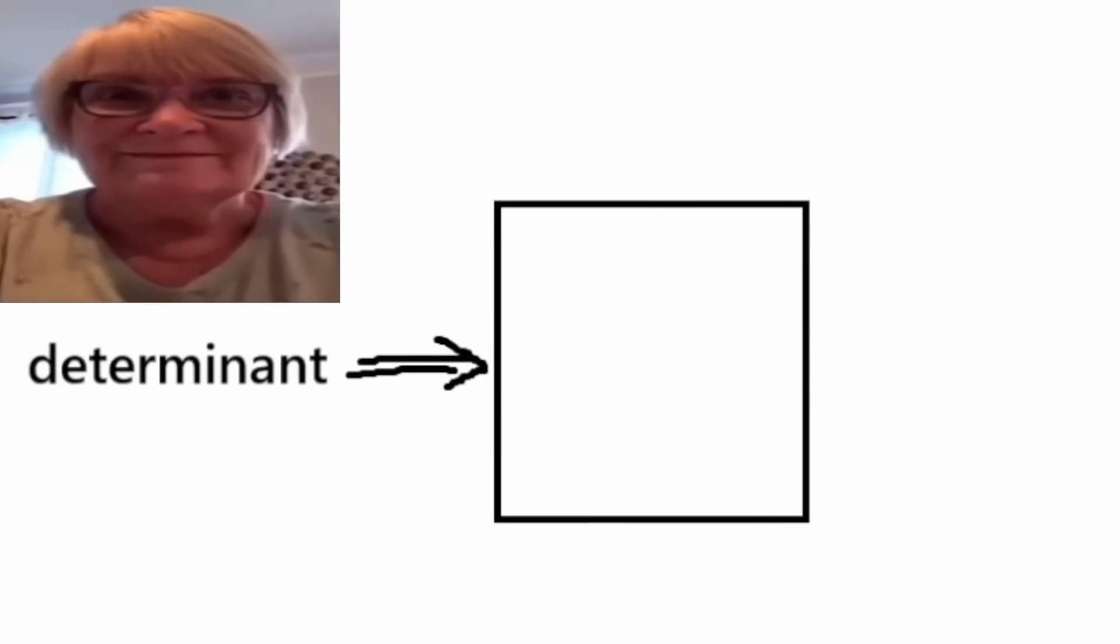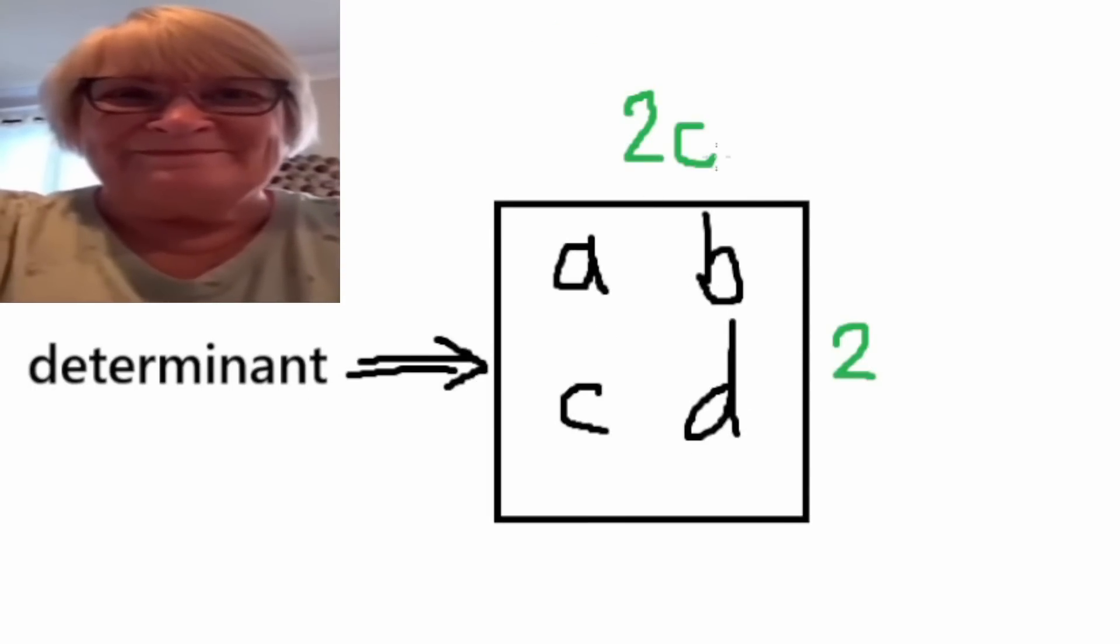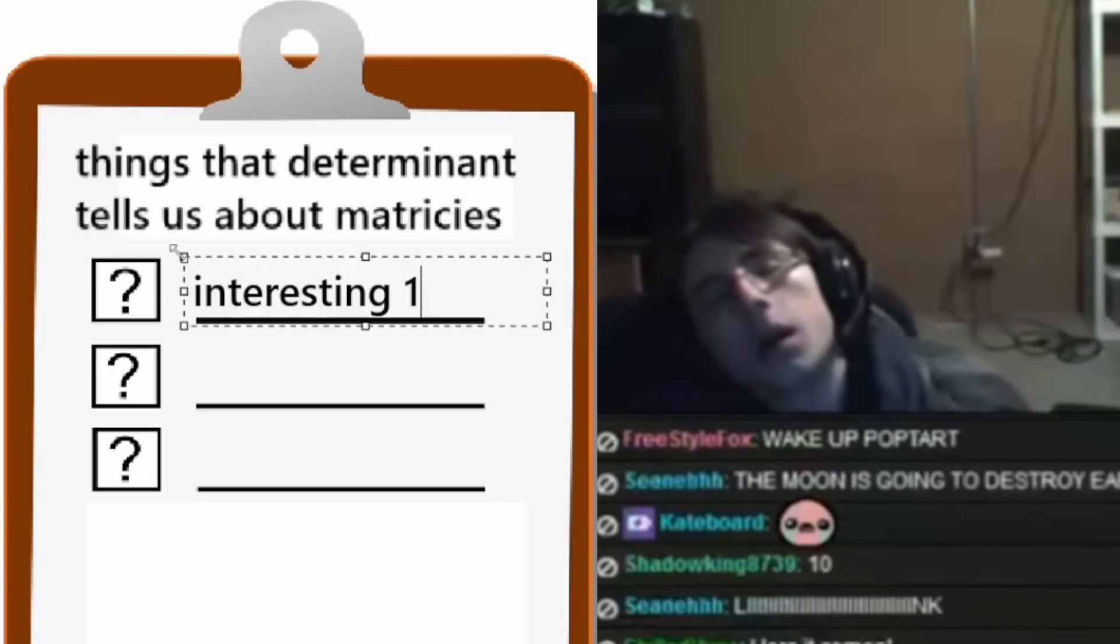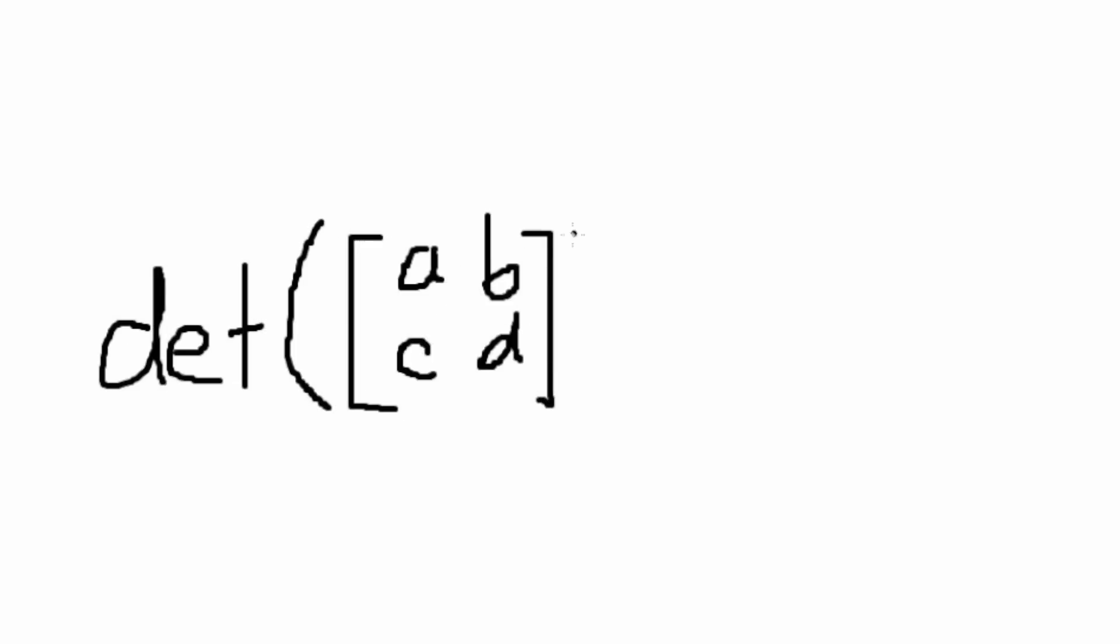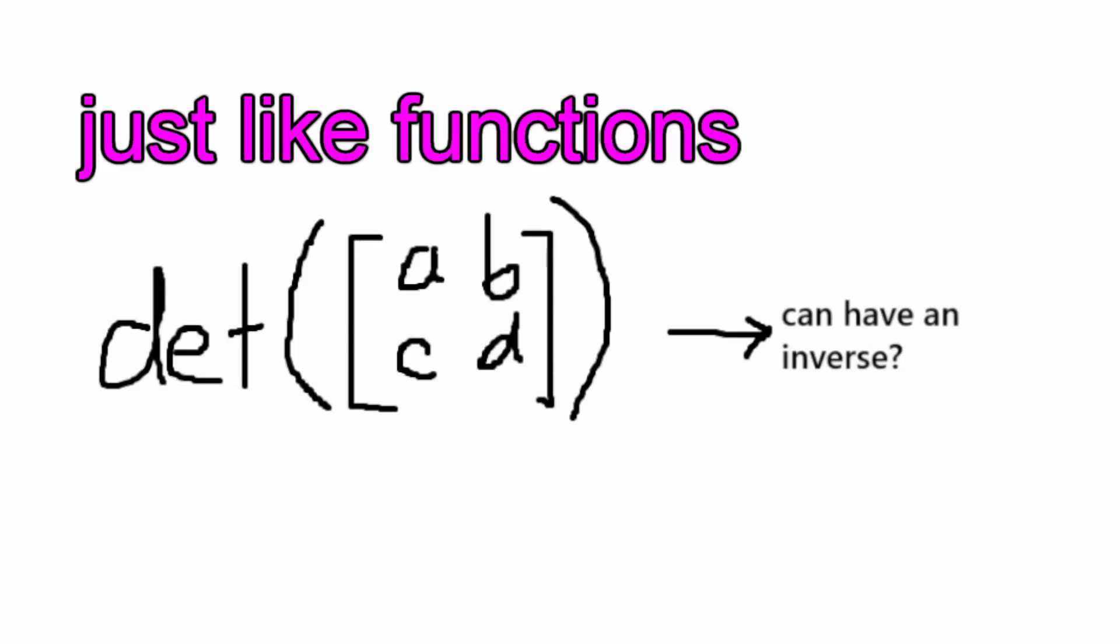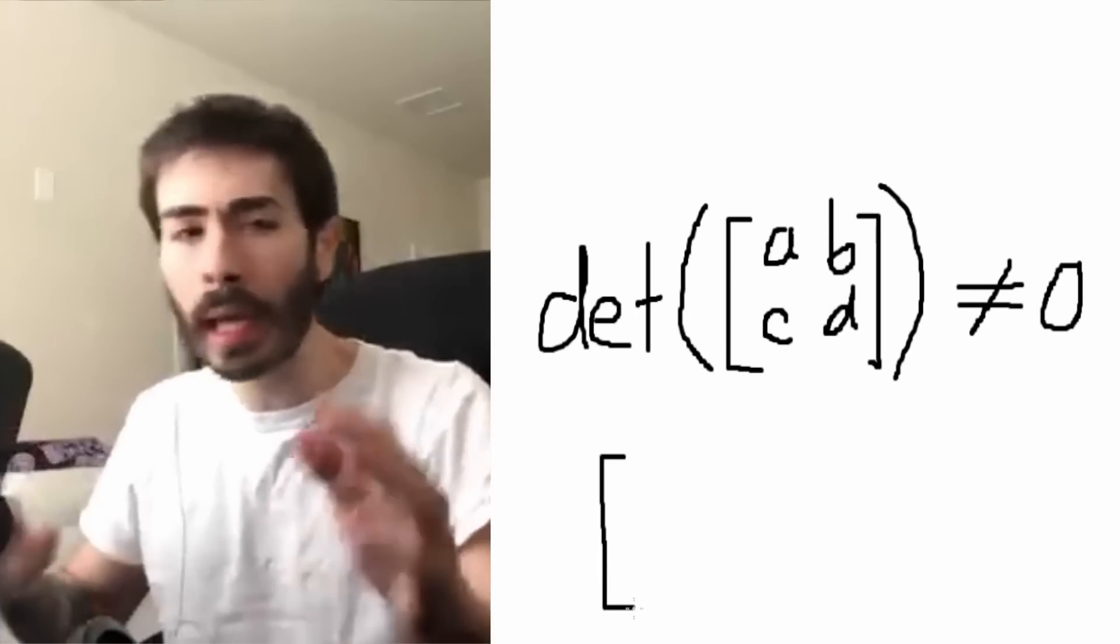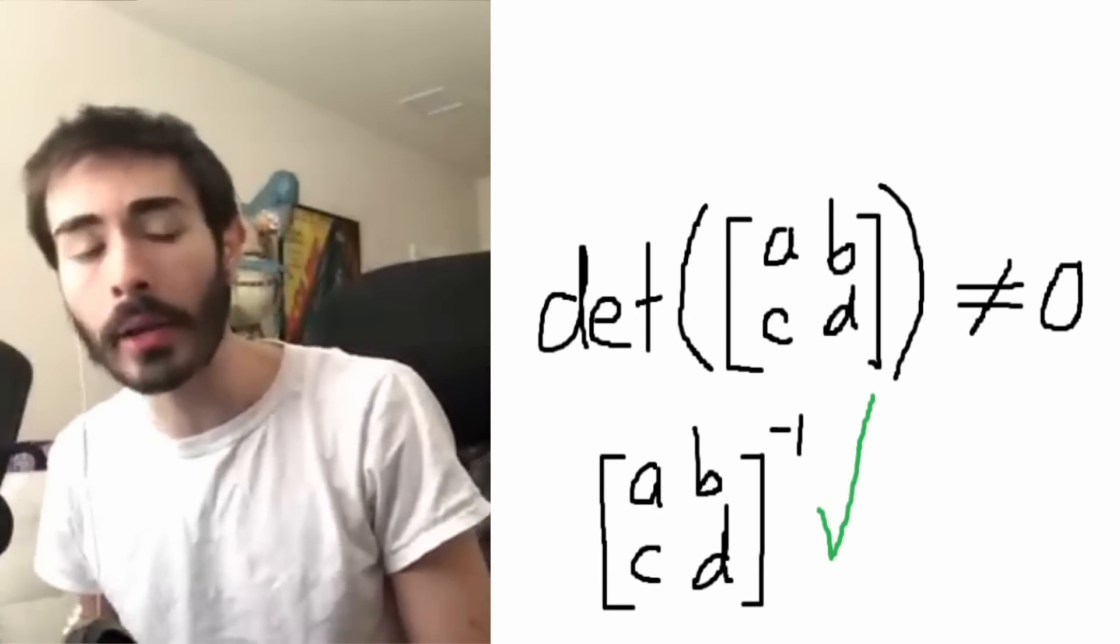Now, these only apply to square matrices, those with the same amount of rows as columns. But it allows us to identify three pretty interesting things. The first usage is to see whether it has an inverse or not, just like functions. If the determinant doesn't equal 0, it means it can be inversed.